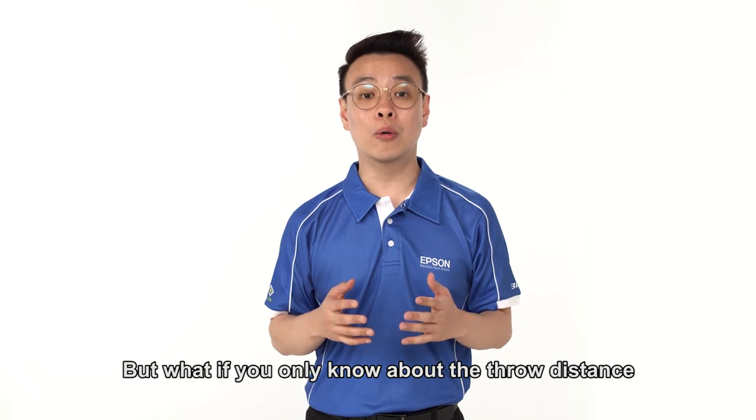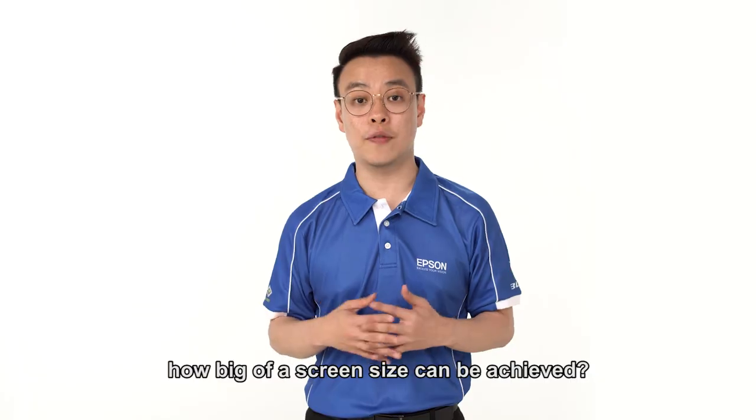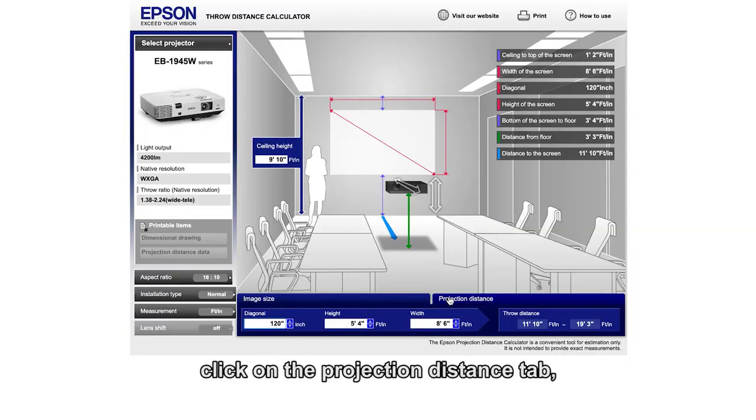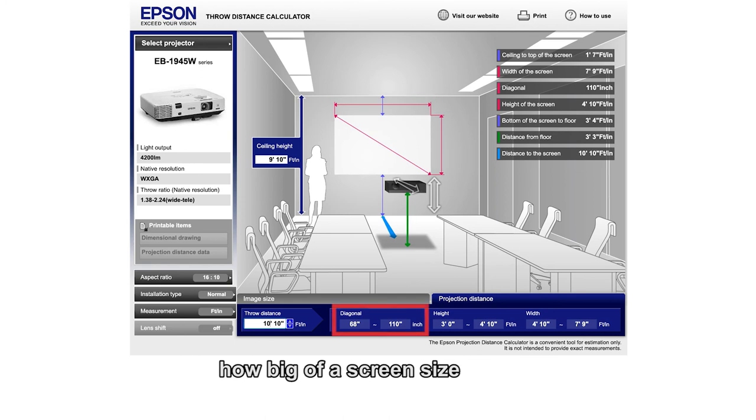But what if you only know about the throw distance and you want to know how big of a screen size can be achieved? Simply click on the projection distance tab, key in the throw distance available. Based on the throw distance information, you will now be able to estimate how big of a screen size you can attain at the available throw distance.